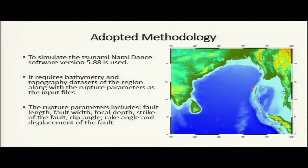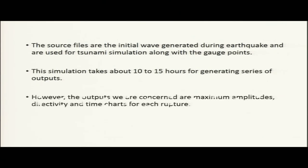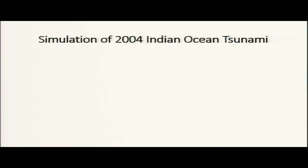We generate a series of files using the fault parameters — fault length, fault width, focal depth, strike, dip angle, rake angle, and displacement of about 10 meters in the Andaman-Sumatra area. The rupture created by this earthquake was around 1300 km. We gave those parameters, generated the tsunami in the whole area, and observed how much time it took to reach the coastal part of India.